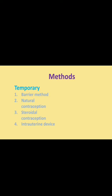The third temporary method is steroidal contraception, which includes the use of OCPs (oral contraceptive pills) and IUDs (intrauterine devices) that contain steroids to hinder pregnancy.